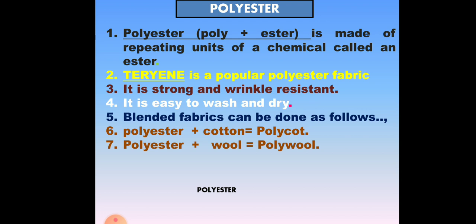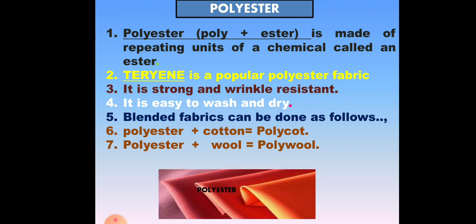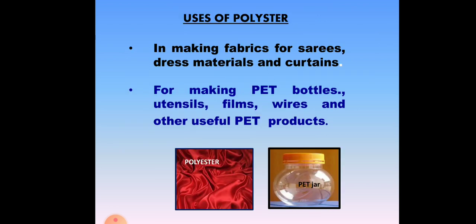Blended fabrics: Polyester and cotton combine to get polycot. Polyester and wool combine to get polywool. The uses of polyester include making fabrics for saris, dress materials, and curtains. It is also used for making PET bottles, utensils, films, wires, and other useful PET products. PET stands for polyethylene terephthalate.